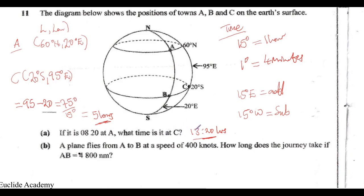To summarize: 15 degrees equals 1 hour, so find the difference in longitude, then divide by 15 to convert to hours. If there are remaining degrees, multiply by 4 to get minutes and add to the hours. When both points are on the same side of the Greenwich Meridian, subtract to find the longitude difference; if they are on opposite sides — one east, one west — you add.